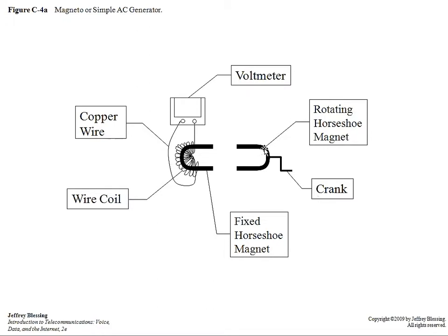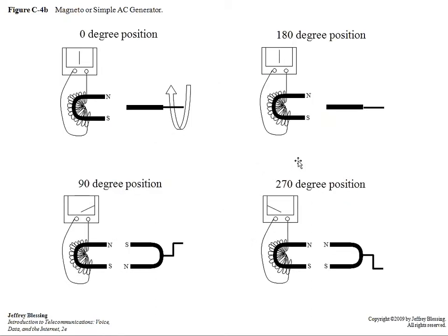On the magnet on the right, imagine I have it mounted on some type of device and I can turn a crank. When I turn the crank, I can rotate it in a full circular motion. Using this simple device setup, we're going to describe how we can generate an electrical field from these two magnetic fields.